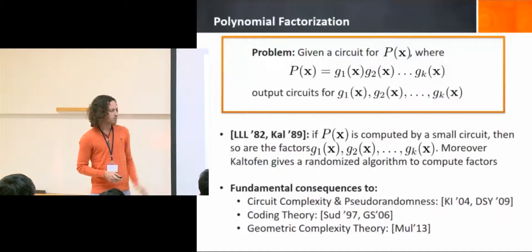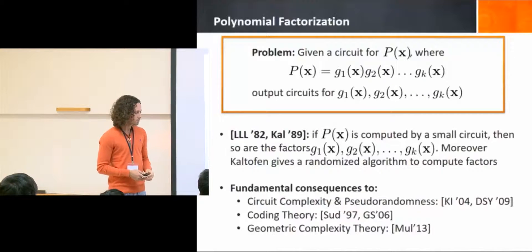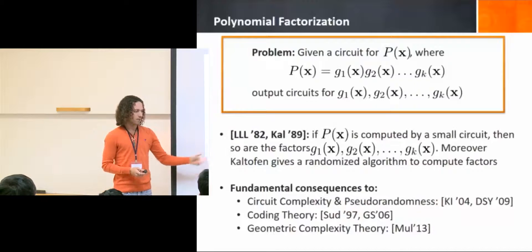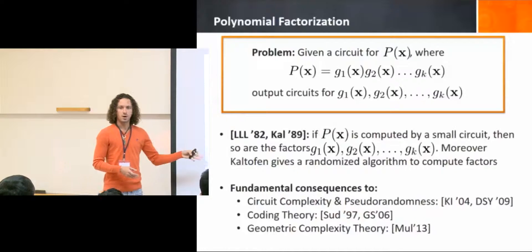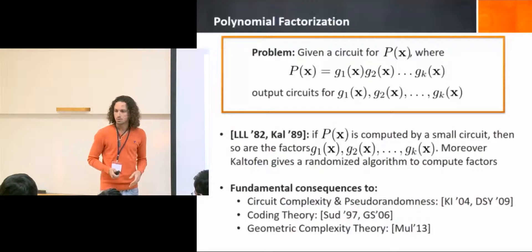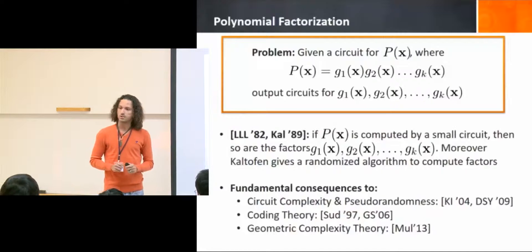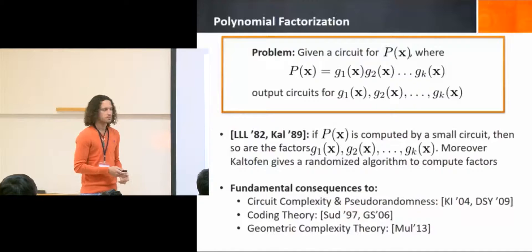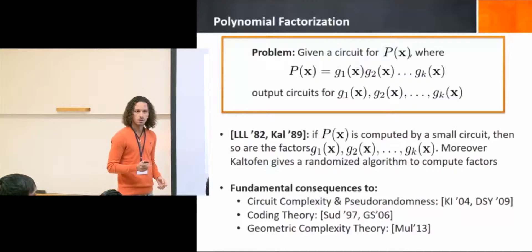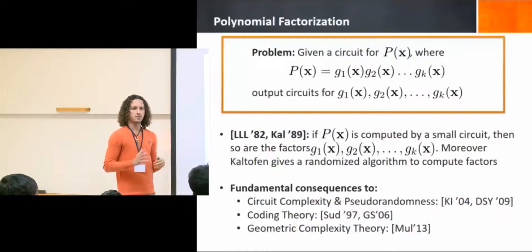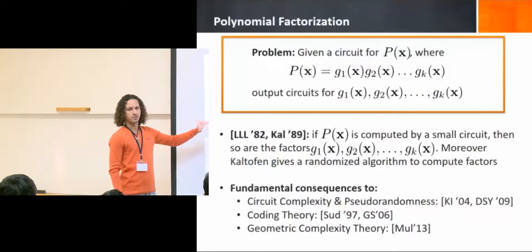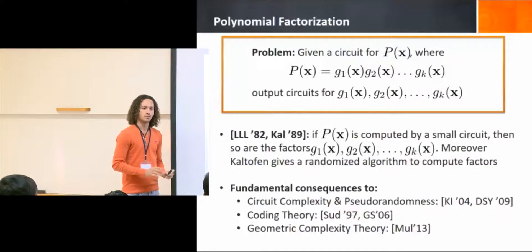Kaltofen gave a randomized algorithm that, given a circuit for a polynomial, outputs circuits computing the factors. It's probabilistic — with high probability the circuits are correct. This works over any field of large enough characteristic; to be safe, if F has characteristic higher than the degree of the polynomial, you're fine. For small characteristic, you need some derivatives to hold. If the degree is a multiple of the characteristic, you'll run into some problems.